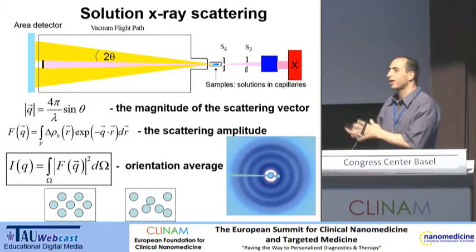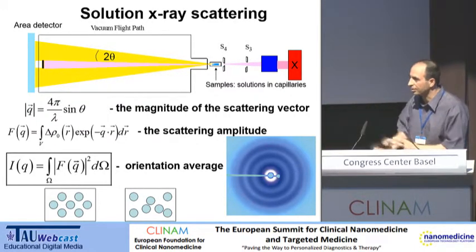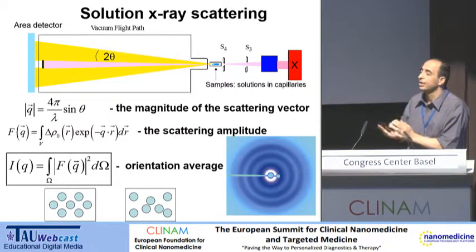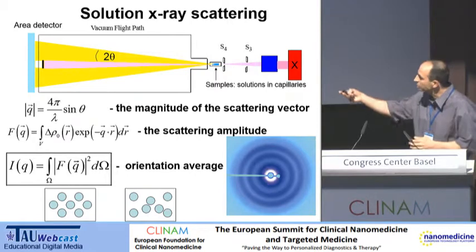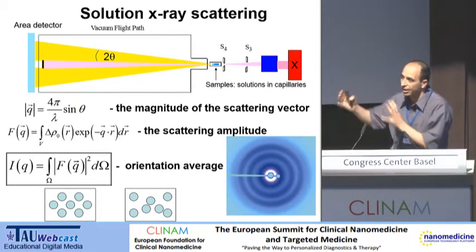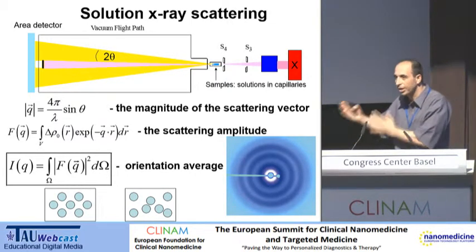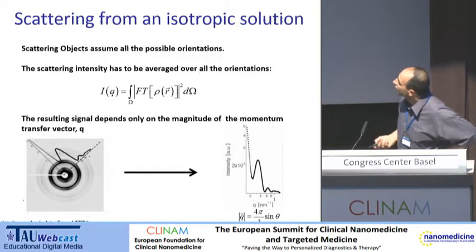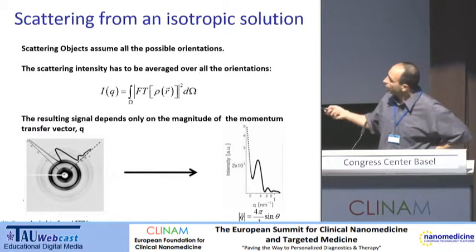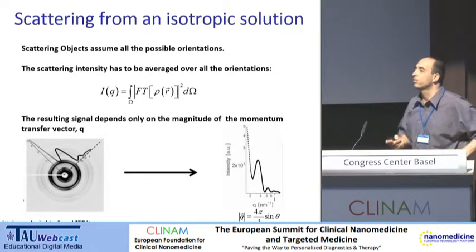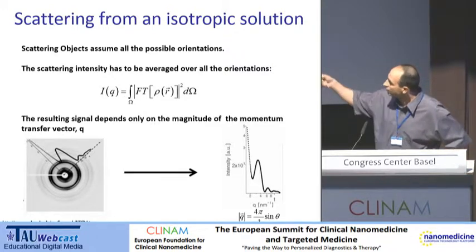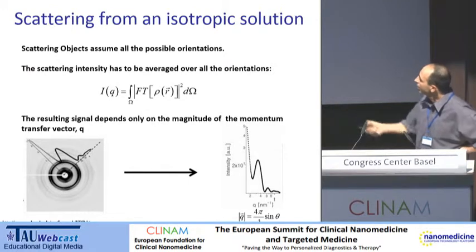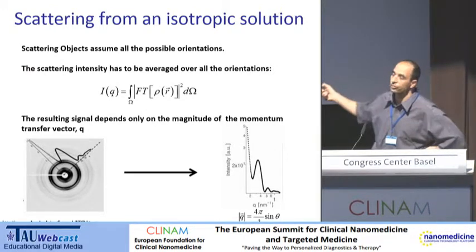If you have particles in orientations without any order between them, you'll see this shape. In addition, if you have some order — as you see on the bottom left, when you have spheres in a hexagonal pattern — you'll see correlation peaks that correspond to this organization. Typically, when we have this radial pattern, we integrate the intensity radially. From each ring, we get the intensity and plot it as a function of the scattering angles.